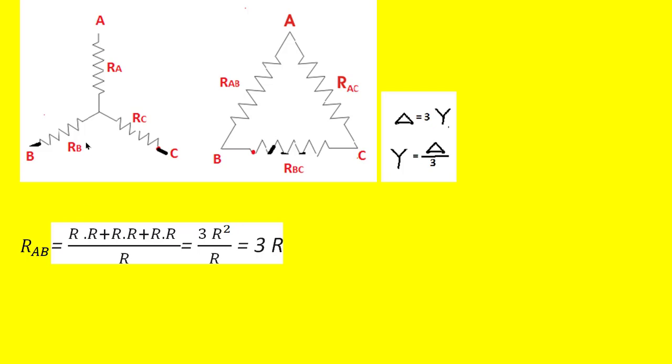So Ra·Rb means R times R, which we write as R². Next, Rb·Rc is also R·R, so we write R² again, plus Rc·Ra which is R·R. The sum of the numerator is 3R², and we divide by the resistance not between A and B, which is Rc, also equal to R.